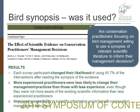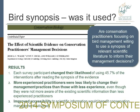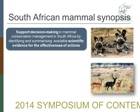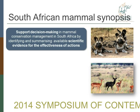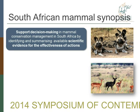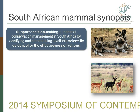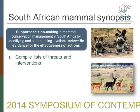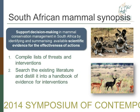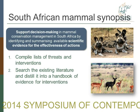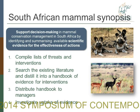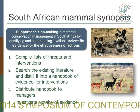Looking at this, we at UWT thought it would be very useful to develop a sort of mini synopsis for South African mammals — essentially to support decision-making in mammal conservation management in South Africa by identifying and summarising all the available scientific evidence for the effectiveness of actions. Our steps were to compile a list of threats and interventions, search the existing literature, and distill this into a handbook of evidence for interventions for mammal conservation, then distribute this handbook to managers and investigate the uptake of evidence. It's basically a mini project, not at a global scale.